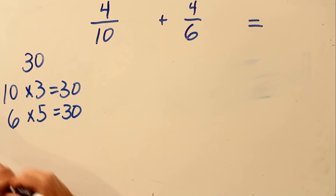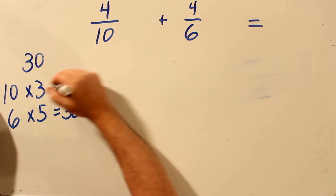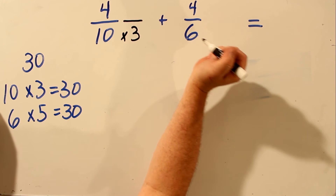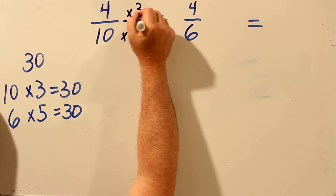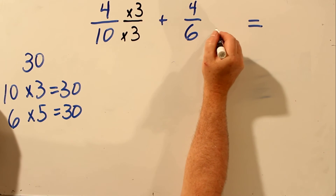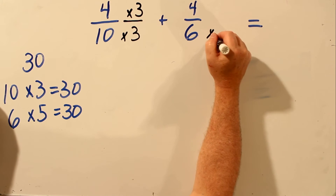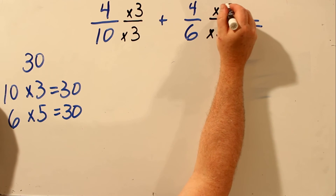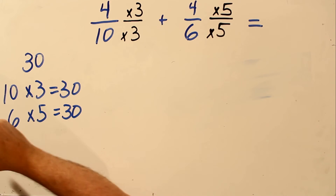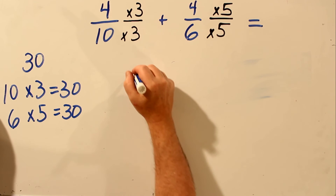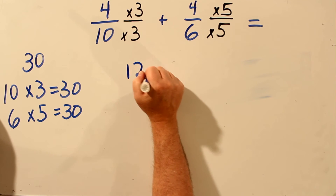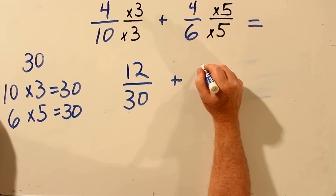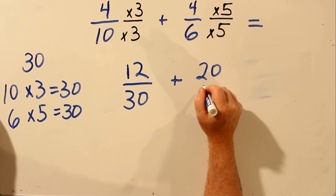Knowing this, we can multiply the 10 by 3 — 10 times 3 is 30. And if we multiply the bottom number by 3, we have to multiply the top number by 3. And over here, we can multiply the 6 by 5 to get 30 — 6 times 5 is 30. And if we multiply the bottom number by 5, we have to multiply the top number by 5. So let's do our multiplication: 4 times 3 is 12, and 10 times 3 is 30. Over here, 4 times 5 is 20, and 6 times 5 is 30.